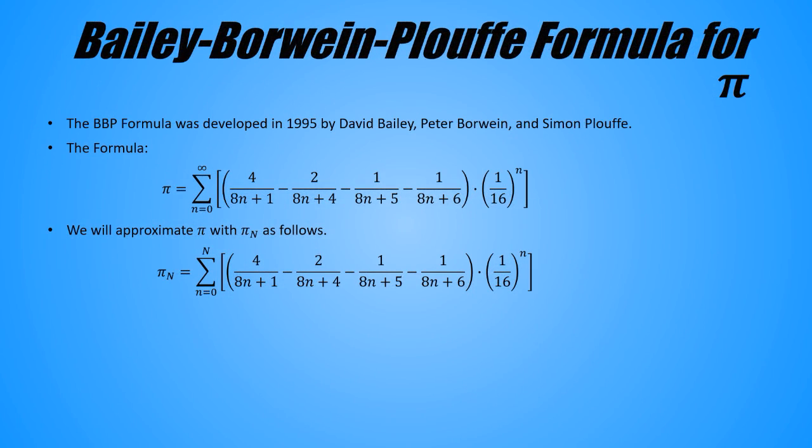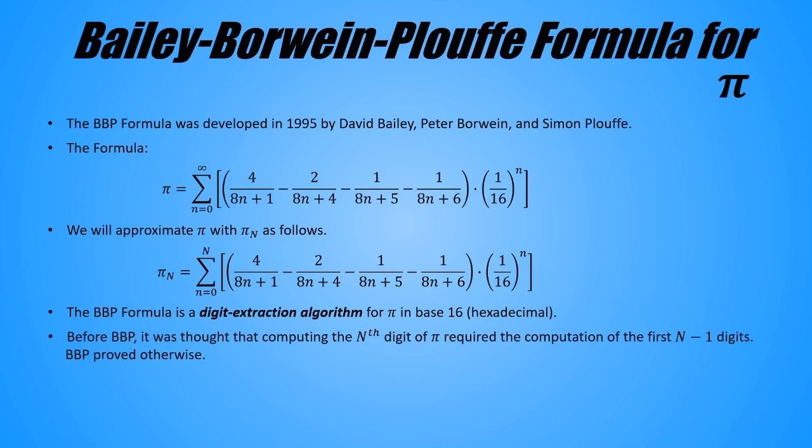What makes this formula so special is that it is a digit extraction algorithm for pi in hexadecimal. That means that it can be used to find any digit of pi in base 16 without computing the previous digits. Before this formula was discovered, it was thought that computing the nth digit of pi required the computation of the first N minus 1 digits, and this formula proved otherwise, and this is an absolutely astonishing result. The upshot of this is that the BBP formula is very fast, as you just saw.